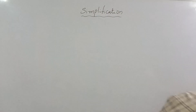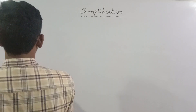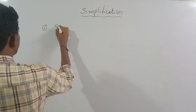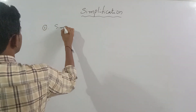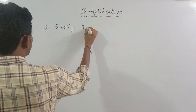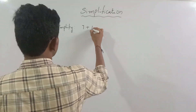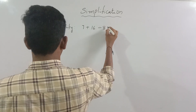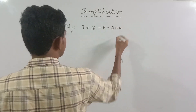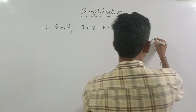7 plus 16 is divided by 8, minus 2 into 4. Okay, simplify. So the answers are: